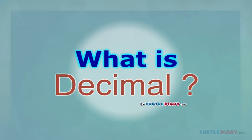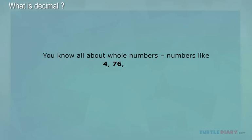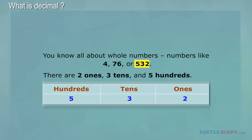Decimals Introduction. You know all about whole numbers, numbers like 4, 76, or 532. In a number like 532, each digit represents something different. There are 2 ones, 3 tens, and 5 hundreds.